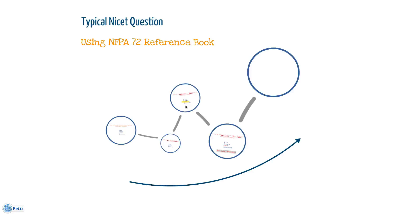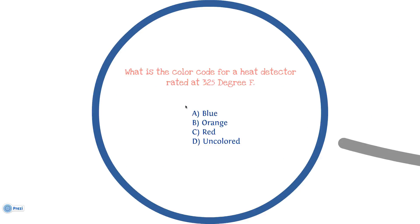Let's see how we can implement this book in an actual test scenario. The question is: What is the color code for a heat detector rated at 325 degrees Fahrenheit? A) Blue, B) Orange, C) Red, D) Uncolored.